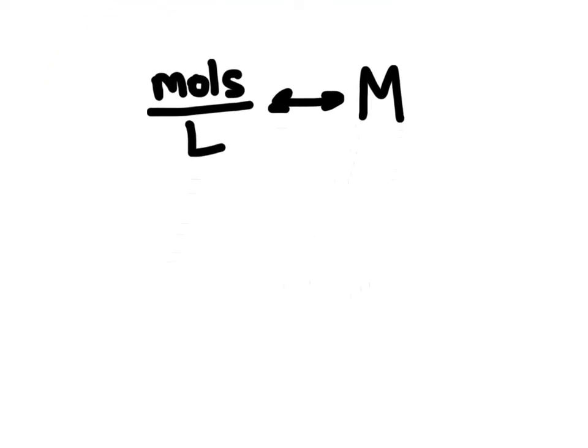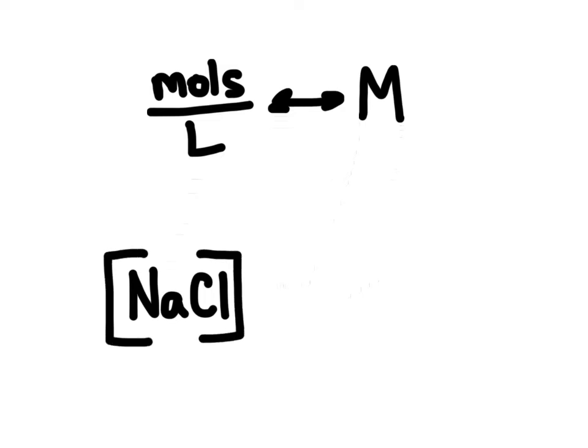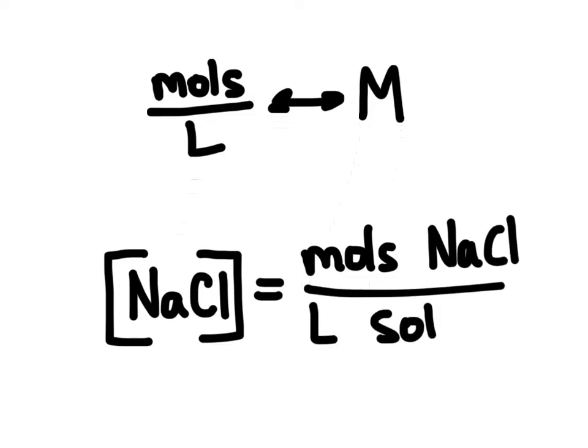When we are finding the concentration of something, we use square brackets to symbolize concentration. For example, if we are trying to find the concentration of salt, sodium chloride, we just place square brackets around it and that means concentration of whatever is inside. So concentration of sodium chloride would be equal to moles of sodium chloride per liter of solution. And that is molarity.